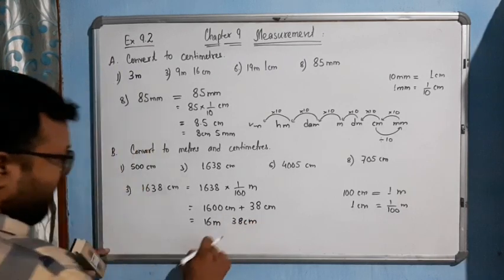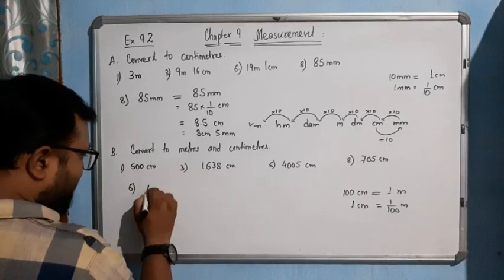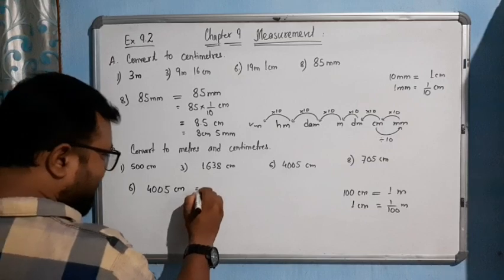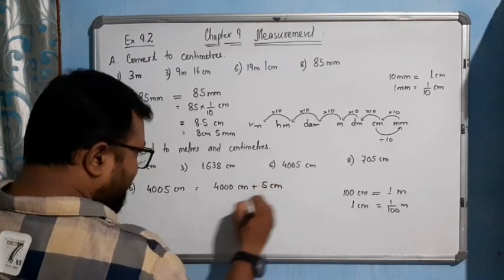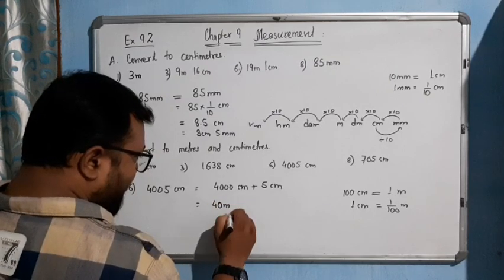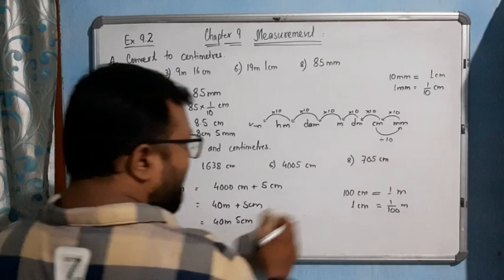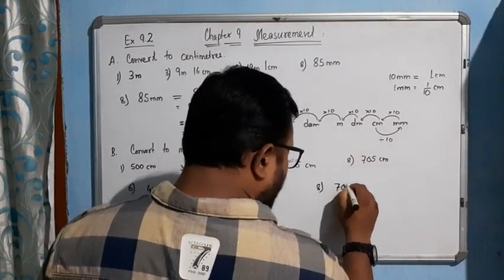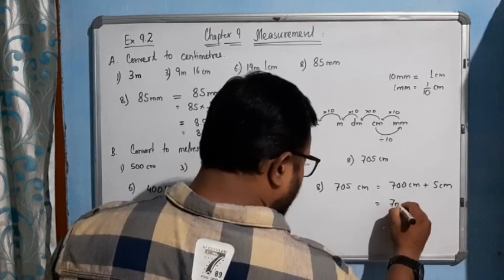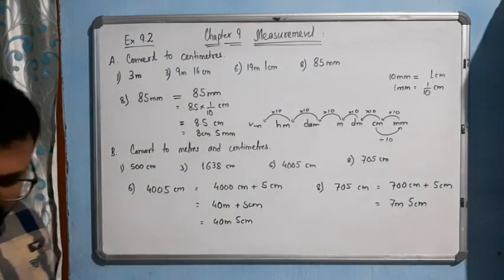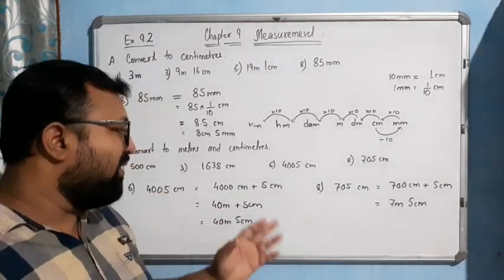For question 6: 4005 centimeters means 4000 centimeters plus 5 centimeters. 4000 centimeters equals 40 meters, so the answer is 40 meters 5 centimeters. For the last one, 705 centimeters: 700 centimeters plus 5 centimeters equals 7 meters 5 centimeters. Just remember the metric scale and you can solve these very nicely. Thank you.